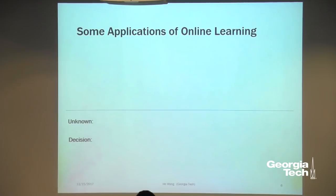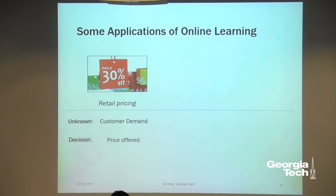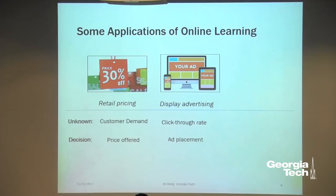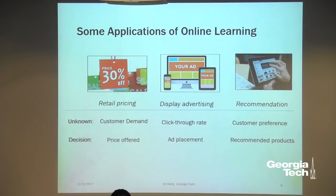Online learning has been popular in machine learning over the past few years. Here are some applications. One is in pricing, where we want to learn customer demand and our decisions are the prices we offer. Another popular application is online advertising, where companies want to display ads on their website but are not sure which ad has a higher click-through rate, so they want to learn that in real time. Another application is recommendation, where companies want to learn customer preferences in order to show the correct product. Today I'm going to focus on using online learning for retail pricing.